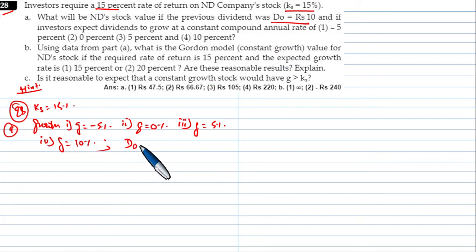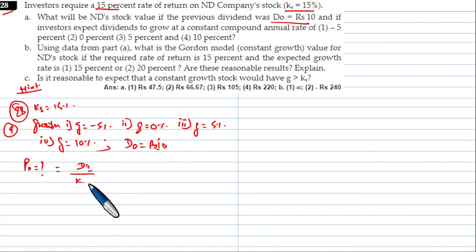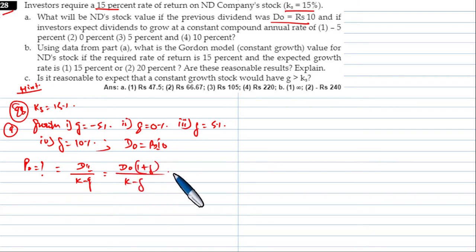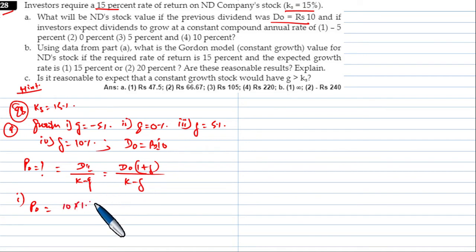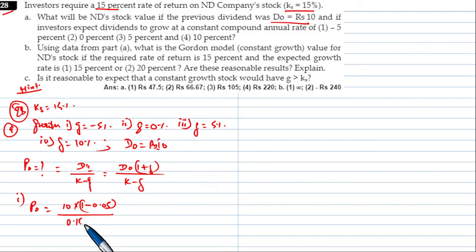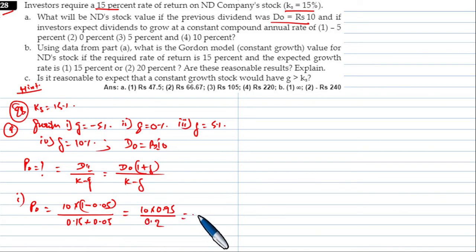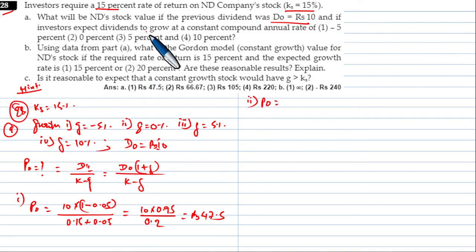D0 is equal to Rs. 10. The price of stock P0 = D0(1 + g) / (k - g). For g = -5%: P0 = 10 × (1 + (-0.05)) / (0.15 - (-0.05)) = 10 × 0.95 / 0.20 = Rs. 47.5.